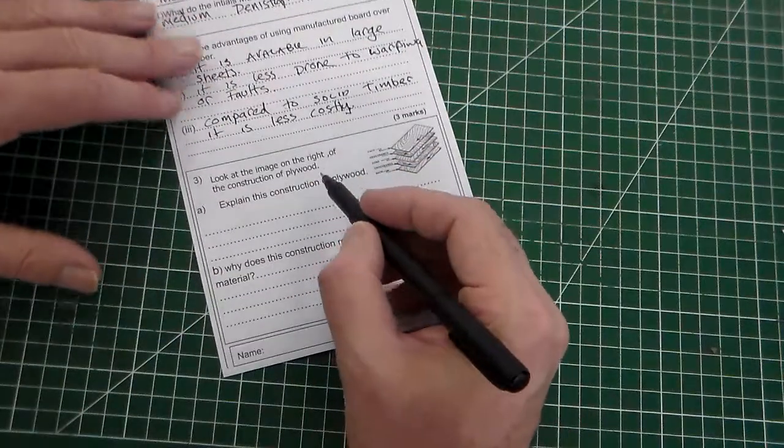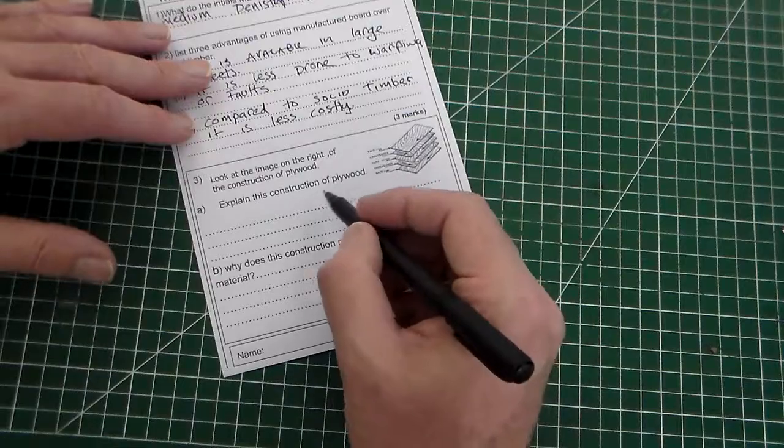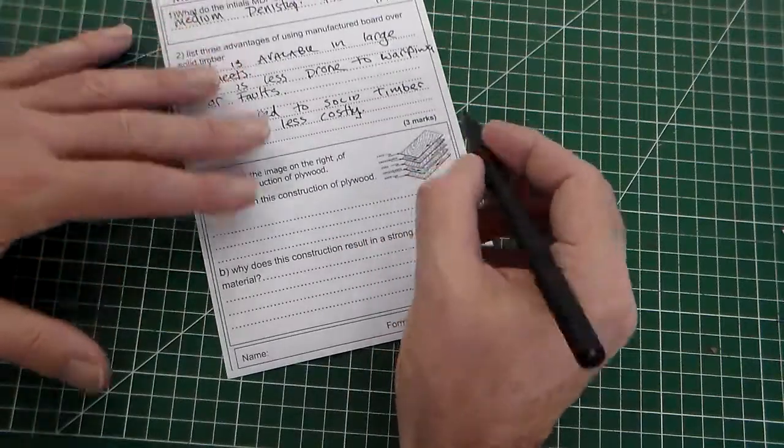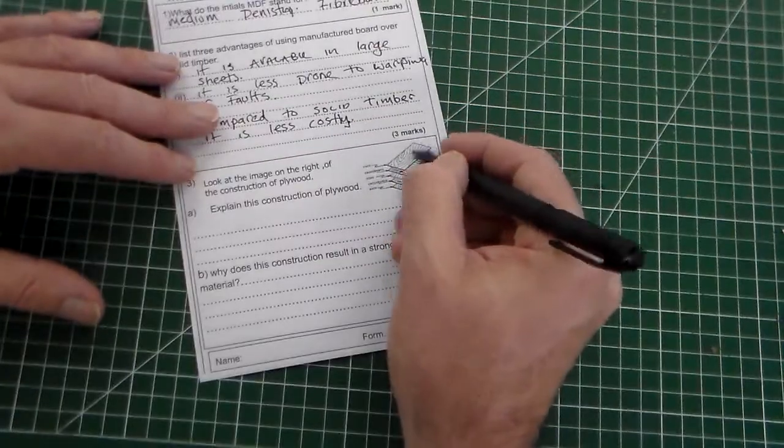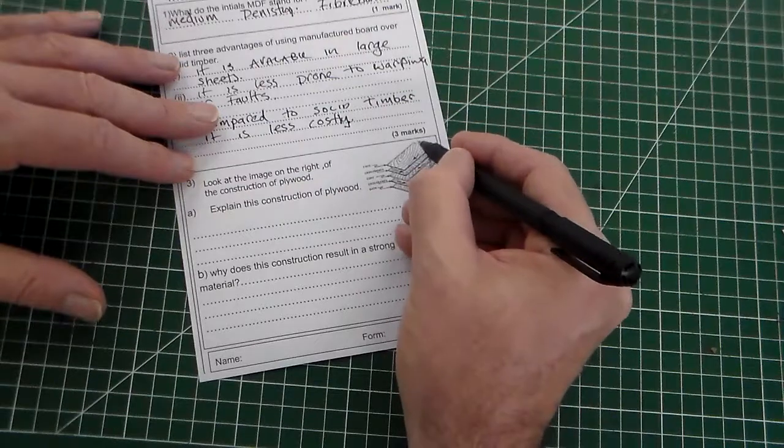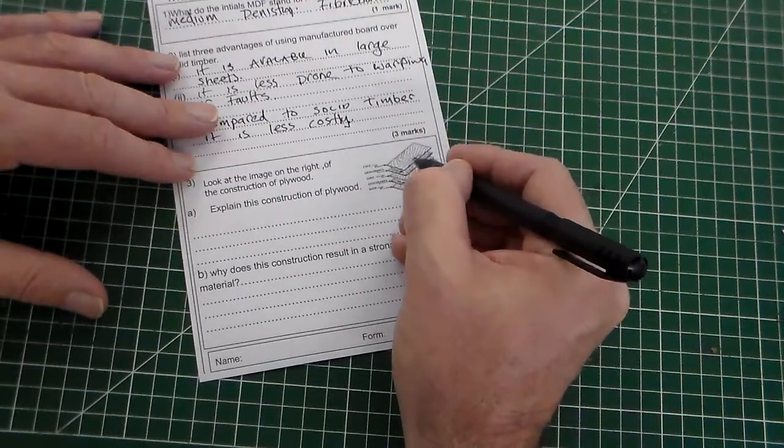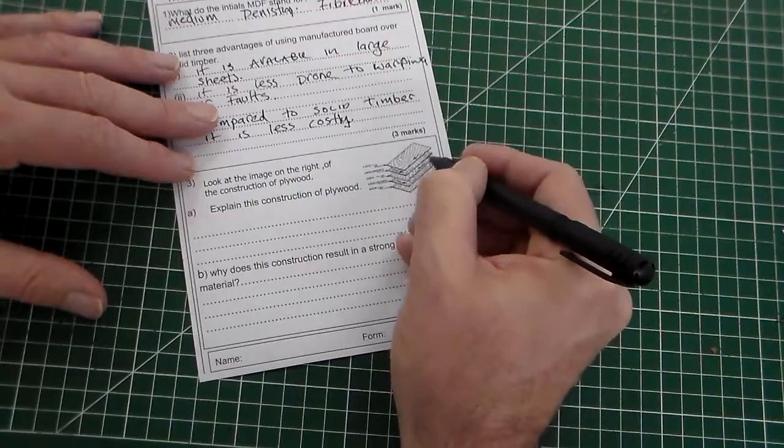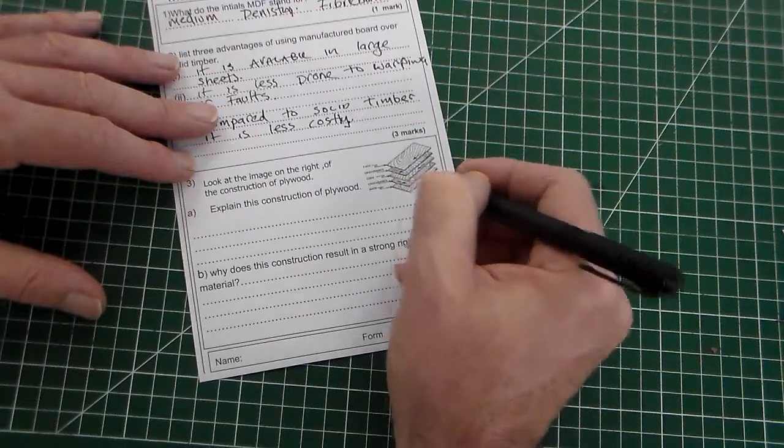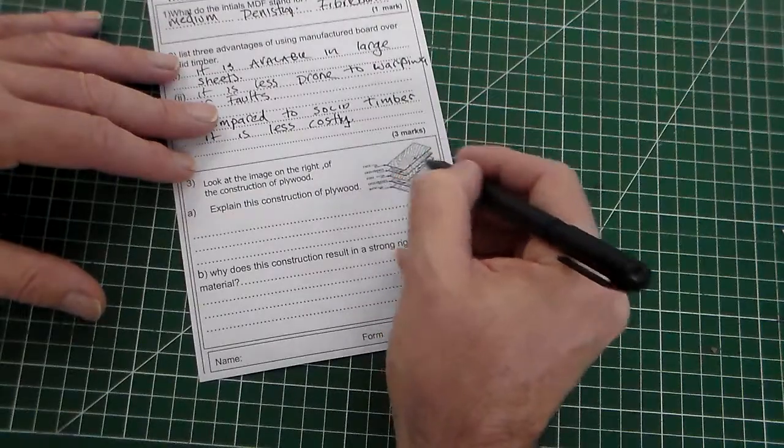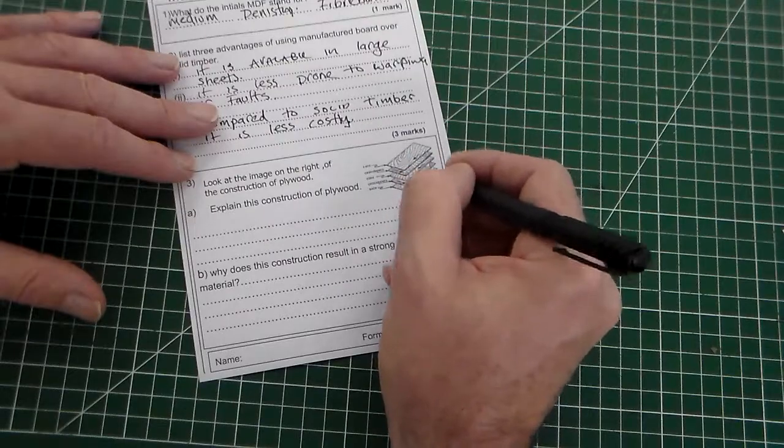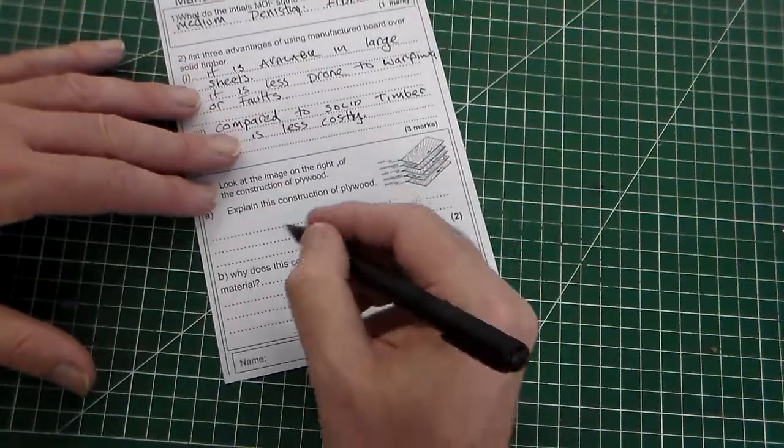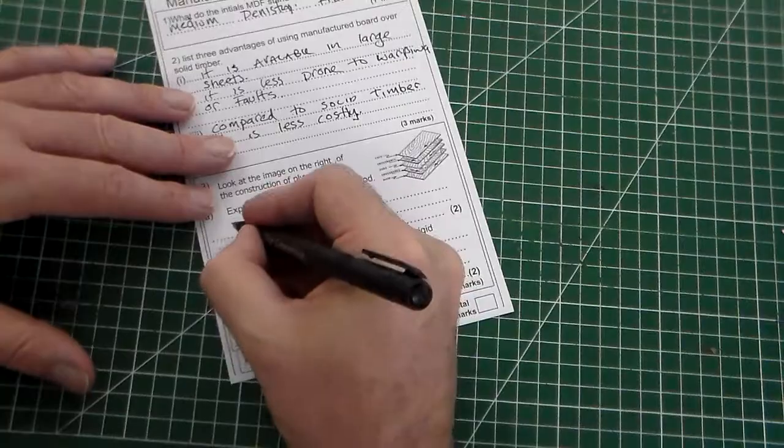Okay, this question, it says, look at the image on the right of the construction of plywood. Explain this construction. So, if you look, it's made, plywood is made of plies or thin layers of wood. You've got the grain going this way, you see the arrow there. You've got the grain going that way, this way, that way, this way. So, the grain direction alternates by 90 degrees each time. Okay, so, we need to explain that.